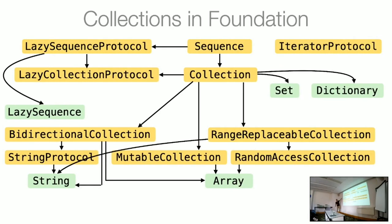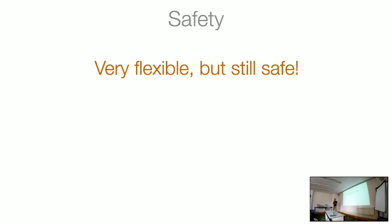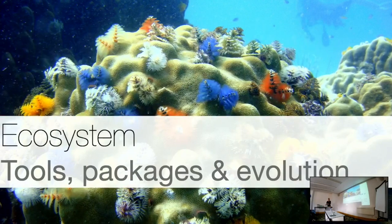Is it worth it? It's very flexible but not uncomplicated. I think it is worth it because if you look at Java's AbstractCollection and the add method, you have five potential exceptions which may or may not happen — it doesn't even tell you about it except in the docs, which you're not going to read anyway. But in Swift there are no such exceptions, because all these things are statically excluded by the types. I'm nearly running out of time, so I want to conclude by saying a little bit about the ecosystem.